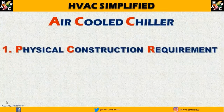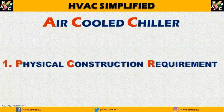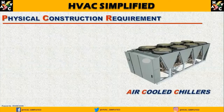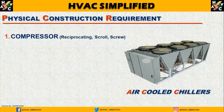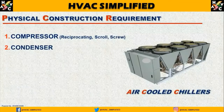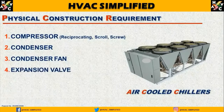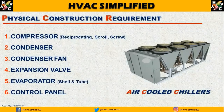First, the equipment elements are: first, physical construction requirements, and second, we will discuss technical requirements. Physical construction requirements of air-cooled chiller. सबसे पहले important component air-cooled chiller में होता है compressor, जो की reciprocating, scroll और screw type के compressor air-cooled chiller में इस्तेमाल किए जाते हैं। Next होता है condenser। Third major component जो होता है वो है condenser fan, expansion valve, evaporator, control panel।